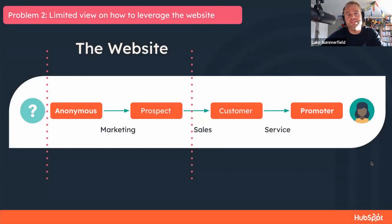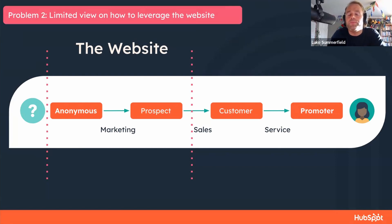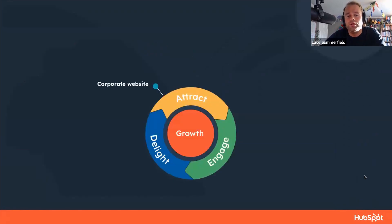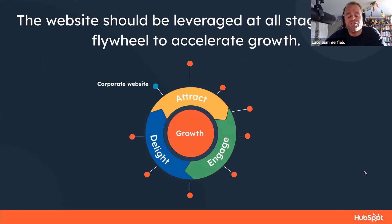The second problem is that companies very much think about the website as a tool to use only during the anonymous-to-prospect phase — to attract visitors through SEO and convert them to leads. Although this is absolutely critical and a great starting point, it's important to recognize that the website can be leveraged as a tool across the entire flywheel, not just the corporate dot-com site. When we look at our best customers and what HubSpot has done, they've really leveraged the website across the entire flywheel in many different ways.